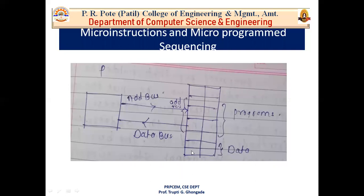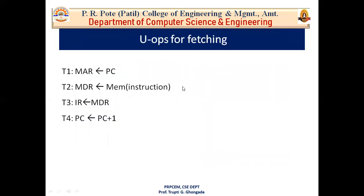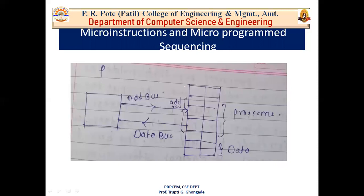In memory there are thousands of memory locations where the program is stored in a series of locations. To fetch any instruction from memory, the processor has to be given an address. The processor puts the address on the address bus and, using the MAR (memory address register), the instruction is selected and comes into the processor through the data bus. After fetching, the instruction comes into the processor via the data bus.